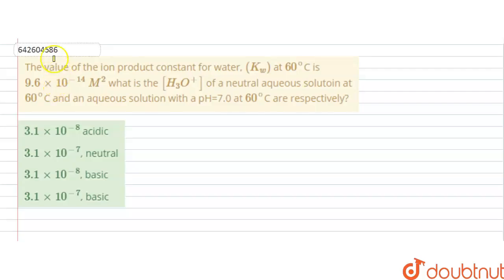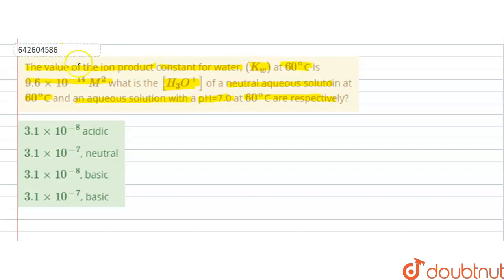Hello students. The question is: the value of the ion product constant for water KW at 60 degrees Celsius is 9.6 into 10 to the power minus 14 molar square. What is the H₃O⁺ concentration of a neutral aqueous solution at 60 degrees Celsius, and an aqueous solution with pH 7 at 60 degrees Celsius, respectively?